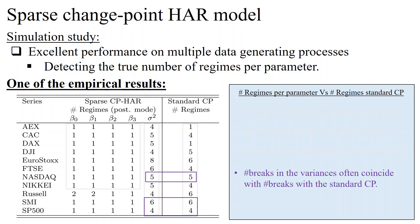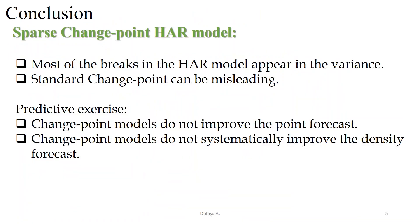Finally, the number and location of the breakpoints detected by the sparse change point HAR process often coincide with those detected by the standard change point model. To sum up our results, most of the breakpoints in the HAR model appear in the variance parameter — a result that does not emerge when a standard change point model is estimated. Regarding the out-of-sample results, we show that change point models do not improve point forecasts, and do not systematically improve density forecasts either.